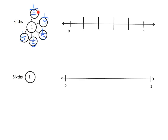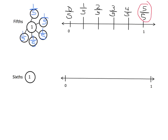We should be able to see that we have five one-fifths, and that equals one whole. On our number line we're being asked to label: zero-fifths, one-fifth, two-fifths, three-fifths, four-fifths, and here is five-fifths. Five-fifths is equal to one whole, and that's going to be the key thing in this lesson.